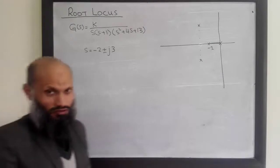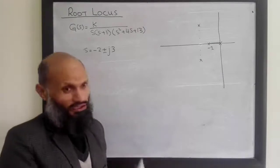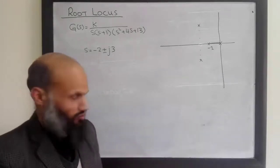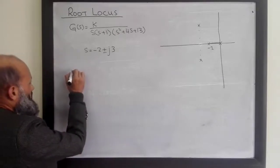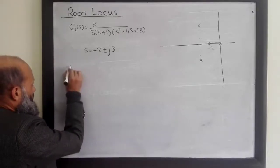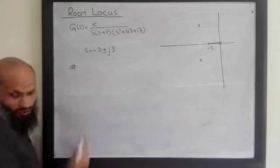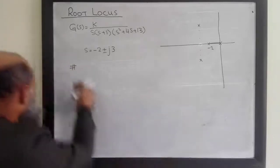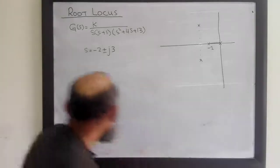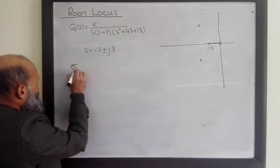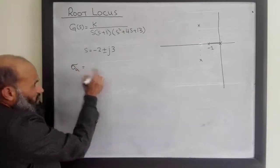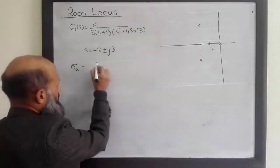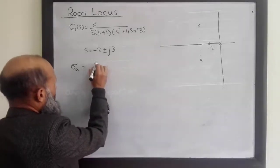How many finite poles? Four finite poles and no finite zeros. Therefore, there are four asymptotic lines. The center of these asymptotic lines, σ_a, equals the sum of finite poles minus the sum of finite zeros, divided by the number of finite poles minus the number of finite zeros. We have poles at 0, -1, and -2 + j3.